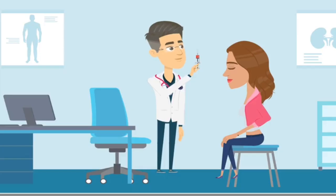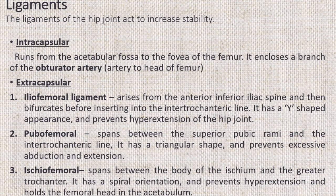Ligaments. The ligaments of the hip joint act to increase stability and can be divided into two groups: intracapsular and extracapsular. The only intracapsular ligament is the ligament of head of femur. It is a relatively small structure which runs from the acetabular fossa to the fovea of the femur. It encloses a branch of the obturator artery, the artery to head of femur, a minor source of arterial supply to the hip joint.